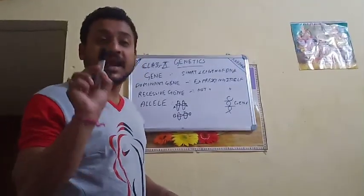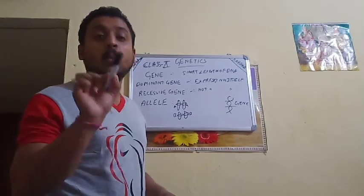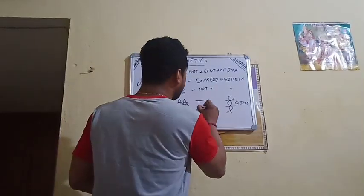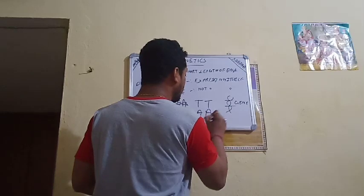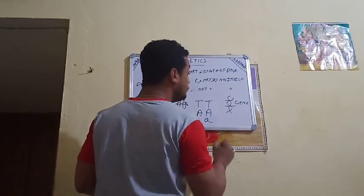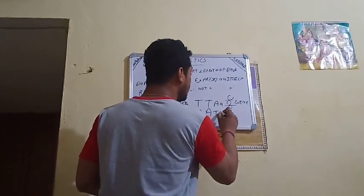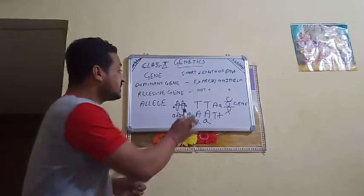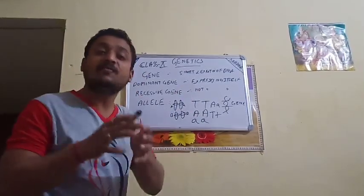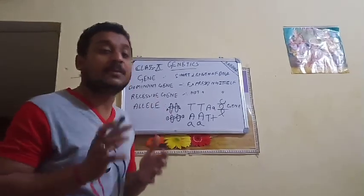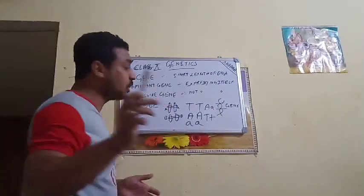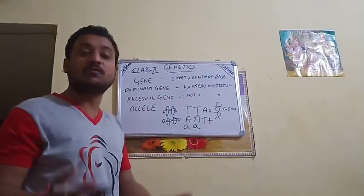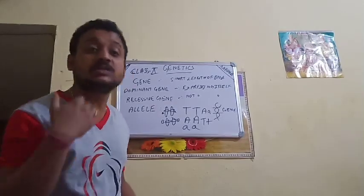The basic criteria for denoting a gene is by letters — like capital T, capital A, small a, capital A with small a, capital D with small d. Capital and small writing has various reasons. The gene is the short length of DNA which codes for protein and develops various characters in our body.